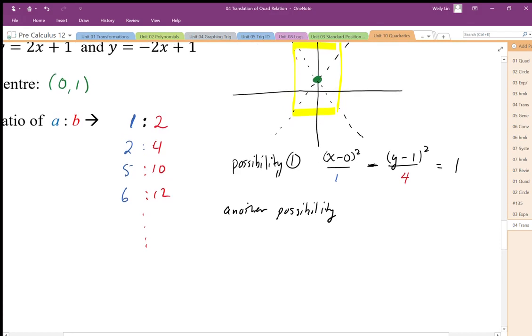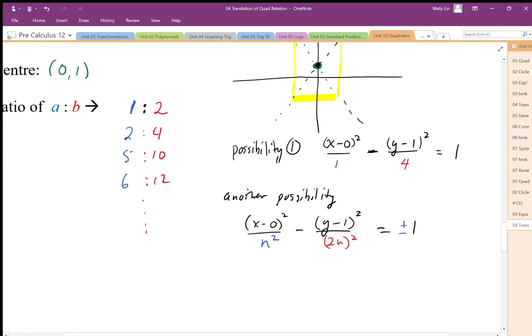So I'm going to start generalizing this then. You could replace this with 1 or 4. But I'm going to generalize this as: (x - 0)² over n² minus (y - 1)² over (2n)². And that's going to equal plus or minus 1 because we still don't even know if this is transverse x or y.